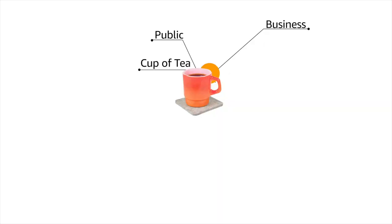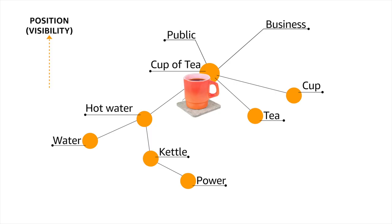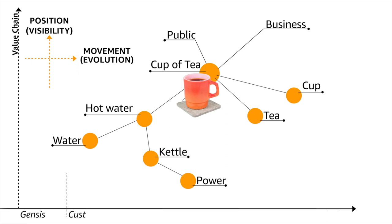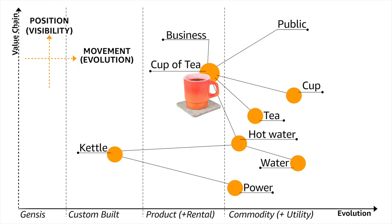A cup of tea needs other things: it needs tea, a cup, hot water. Hot water needs cold water, and that needs a kettle, and the kettle needs power. So I've got a chain of needs, and that chain describes position — through a concept known as visibility. The nearer something is to the consumer, the more visible it is; the cup of tea is very visible, but the power is far removed. That's anchor and position, but I also need movement. It turns out each of those components is evolving through a common pattern: genesis of the novel and new, custom-built examples, products and rental services, commodity and utility services. By placing things where we think they are — is this more a commodity, or more custom-built? — we've got anchor, position, and movement. That is a map. Move anything on this map and it changes its fundamental meaning.